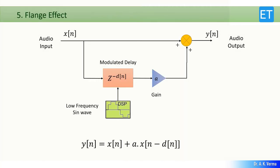Let's see another effect — the flange effect, another very popular effect for music lovers. Comparing the difference equation Y(n) = X(n) + A·X(n - d(n)) with the echo equation, you can clearly see the difference. In echo, the delay d was constant, but here in the flange effect, the delay d(n) is variable. So the flange effect is simulated by giving a variable delay to your music stream.